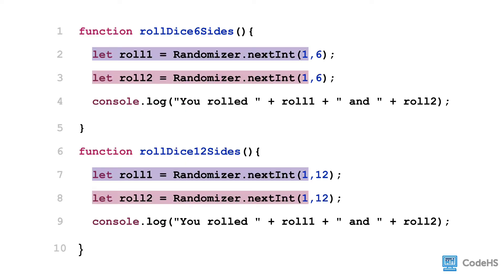Because the first line, and the second line, and the third line of each of these functions are basically identical. In fact, the only difference between these functions is the maximum value in the randomizer function.